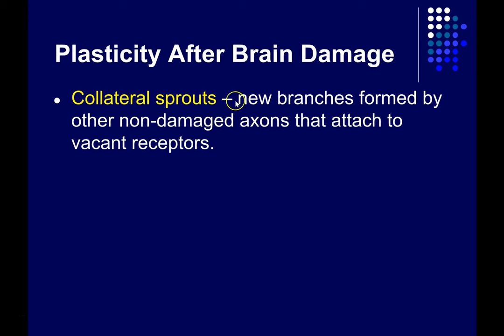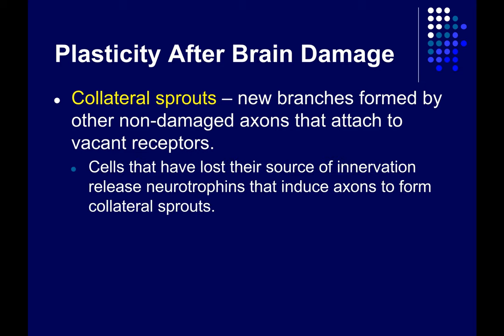Collateral sprouts are new branches formed by other non-damaged axons that attach to vacant receptor sites that have been left vacant as a result of the death of some presynaptic neuron or neurons. These postsynaptic cells have lost their source of innervation — the input that they were getting — and they release neurotrophins that induce axons to form collateral sprouts. Neurotrophins are a class of proteins that encourage the growth and maintenance of neurons in their projections like axons and dendrites.